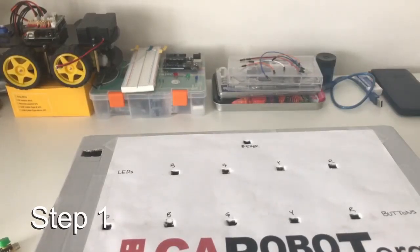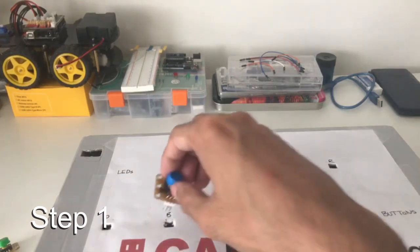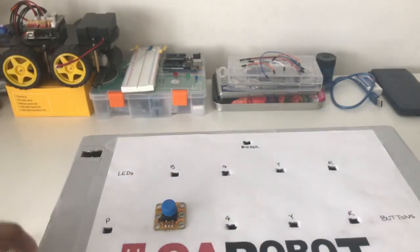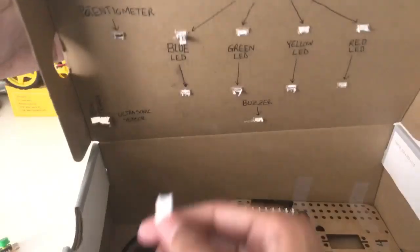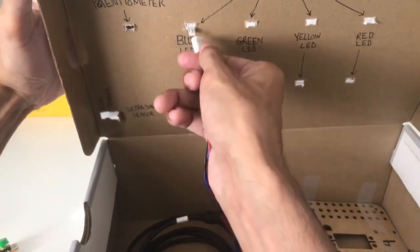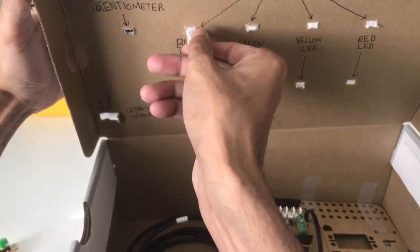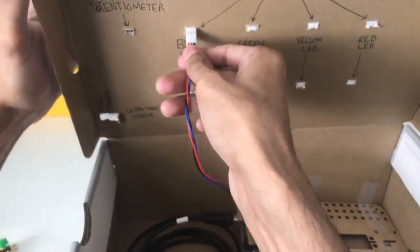The first step is to get one of your buttons, stick it into your box, then hold it in place. From the bottom, insert your jumper wire. This will keep it secure.